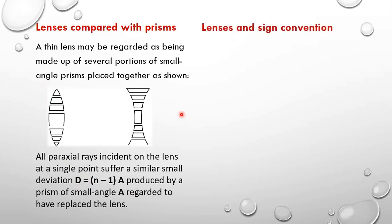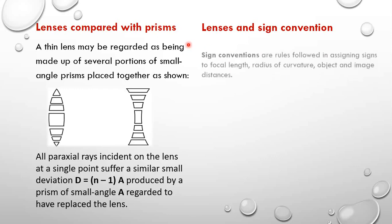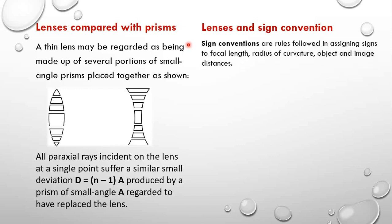Let us look at the lenses and the sign convention. A sign convention is a rule for assigning either positive or negative signs to the focal length, to the radius of curvature, and to the image and object distances.